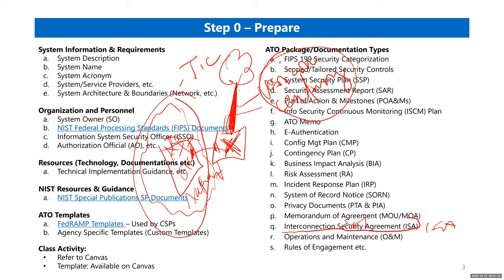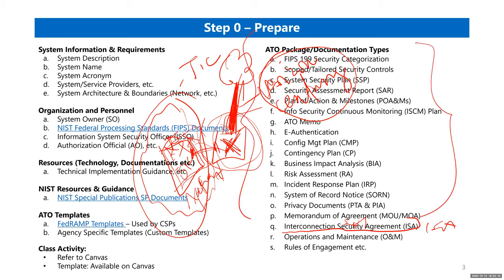If you don't identify the ISA requirement early, you finish building your system, integrate with the external system, and then build the entire package — only to have an assessor ask: where is the security agreement that identifies how this connection is managed and what risk you are inheriting by connecting to this system?